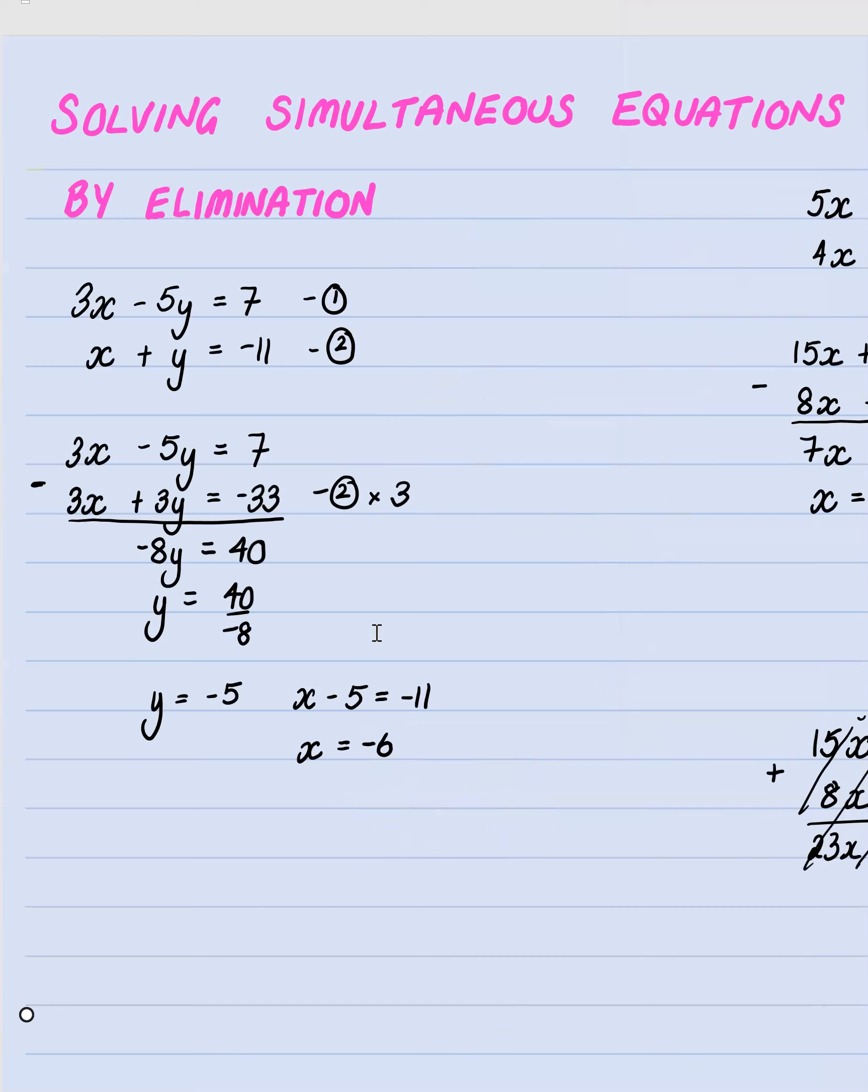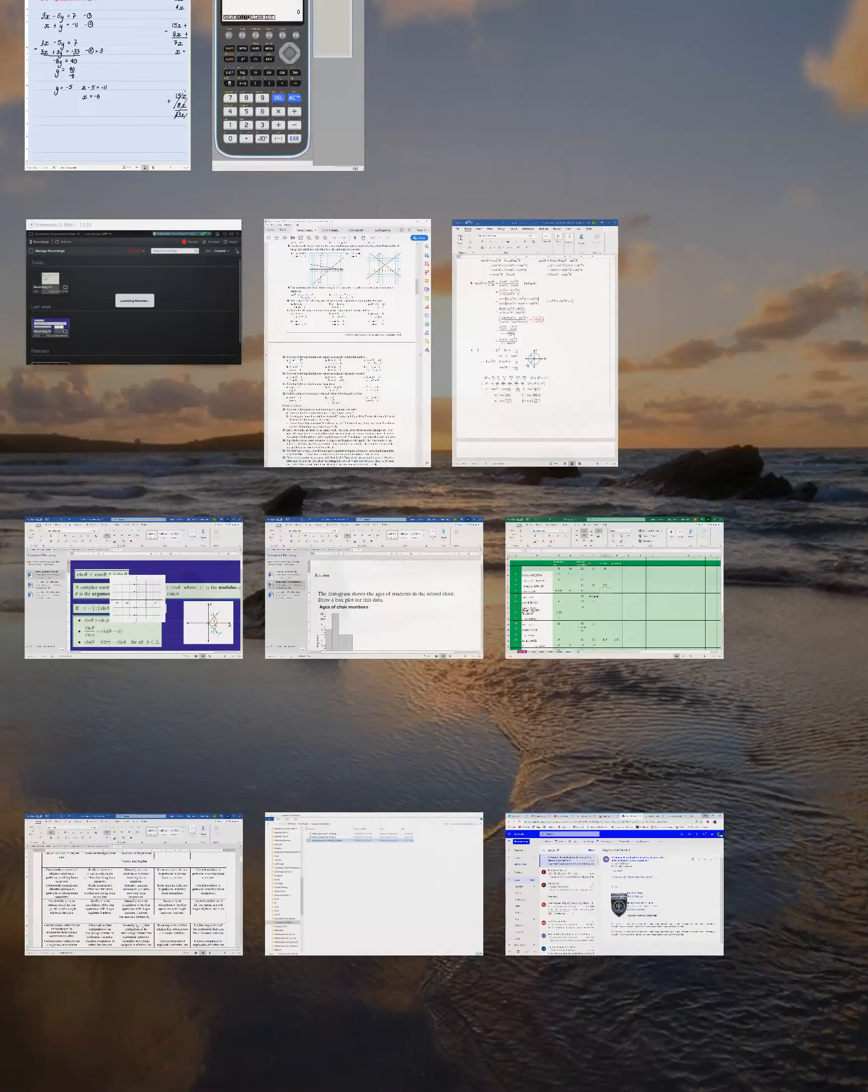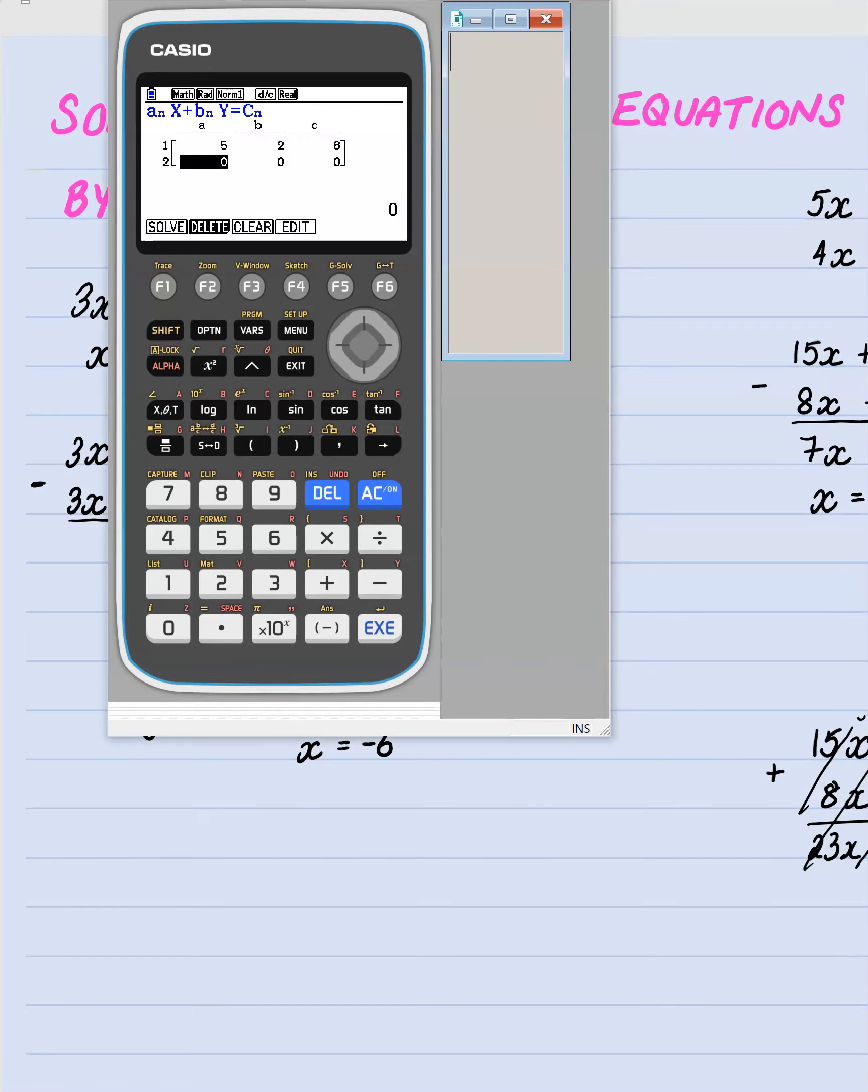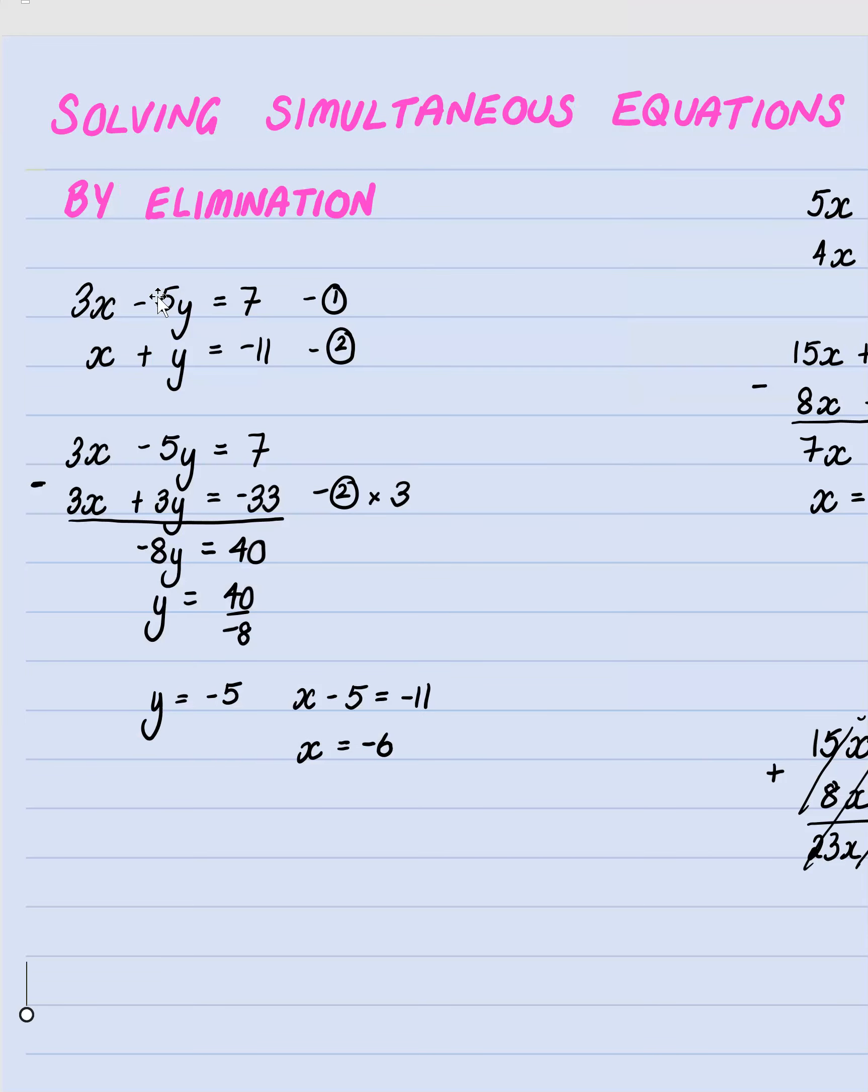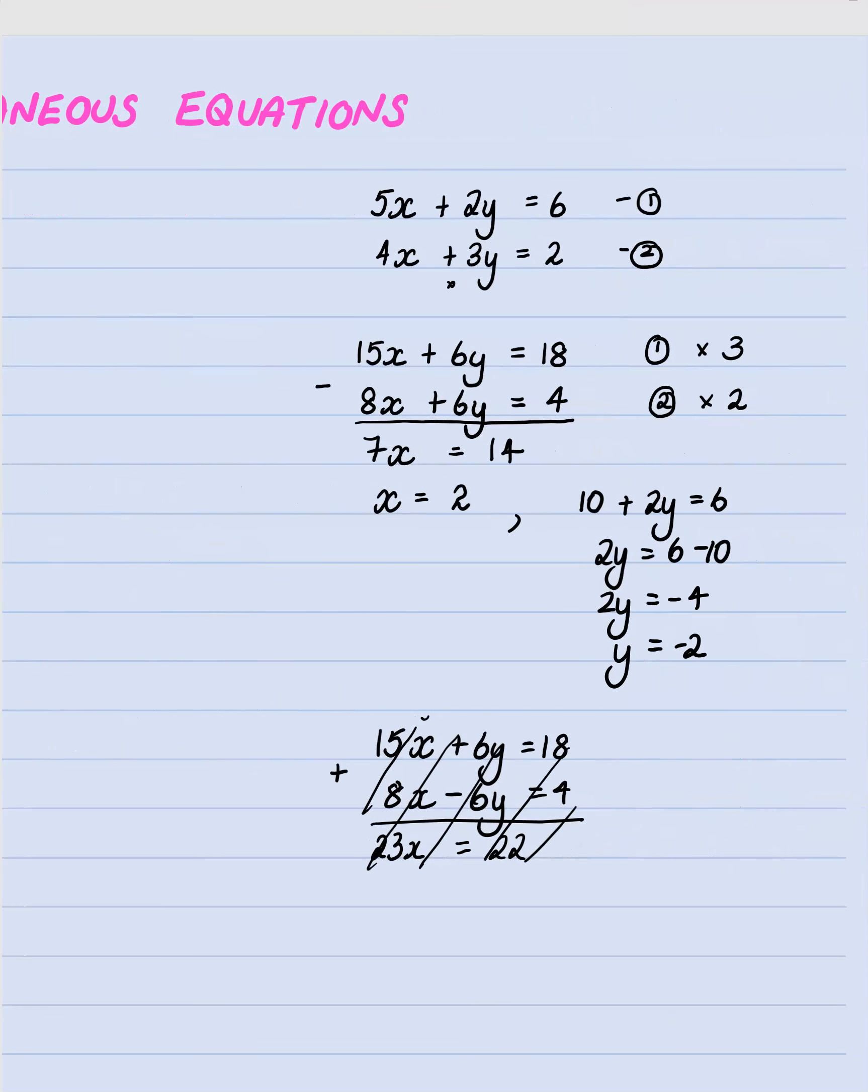And then our other one was 4, 3 and 2. So 4, 3, 2. Enter. You can press enter again or you can go up here and press solve. So we've got 2 and minus 2. And those are the solutions that we've got here. So pretty easy to use your calculator. Okay. Hope that assists.